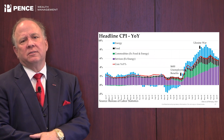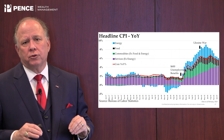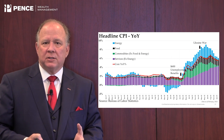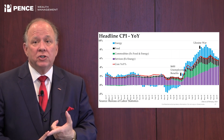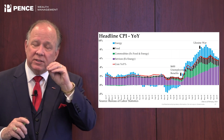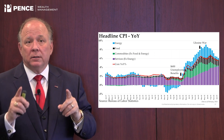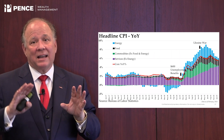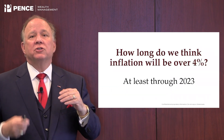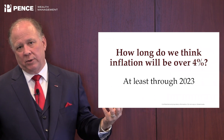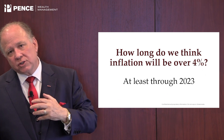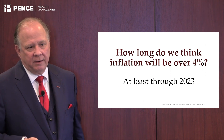Why is inflation so difficult to get under control? It's the components. Energy costs have come down, food costs are coming down, commodity inflation rates have come down. But services excluding energy continues to rise — that's at about 4%. That's why we really think inflation is going to stay over 4% through all of 2023, very sticky in the four-to-five percent range.